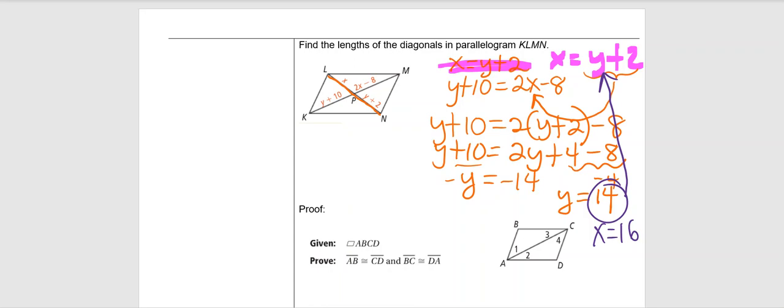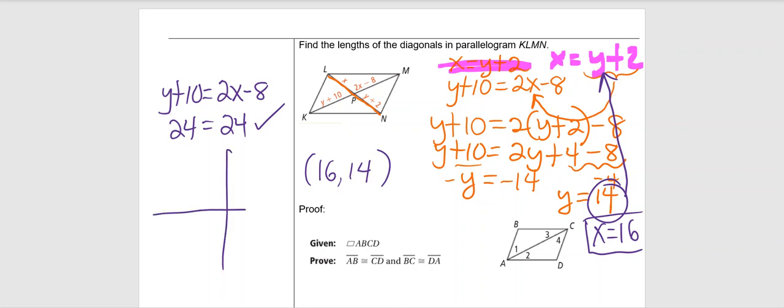Let me just plug this into diagonal KM. I plugged it into the first equation, so I know it works there. Let's make sure that Y plus 10 does equal 2X minus 8. If Y is 14, that's 24. If X is 16, that's 32 minus 8, 24. So that checks out. X is 16, Y is 14. Graphing is a way to solve a system of equations. If you graph these two lines, they would intersect at this point, 16, 14. So I had a graph here and I was way out here at 16 and up here at 14, that's where they would intersect.